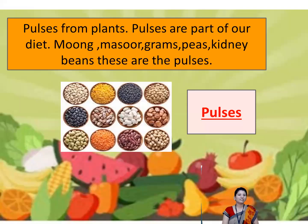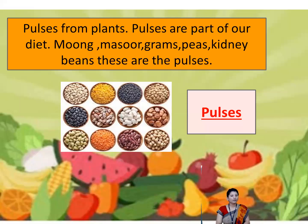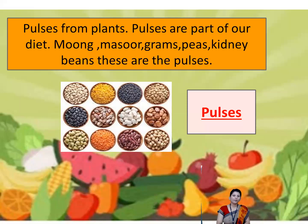We also get pulses from plants. Pulses are part of our diet. Pulses like moong, masoor, grams, peas, and kidney beans — these are the pulses.